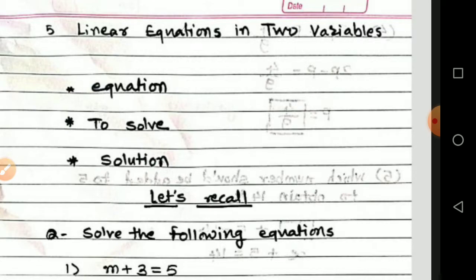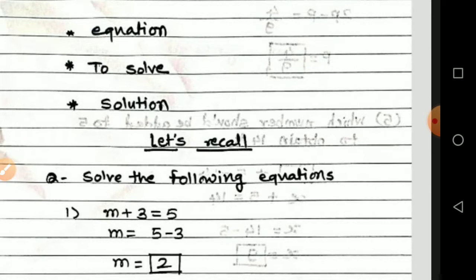In the previous standards — sixth, seventh, eighth — we have seen linear equations in one variable. 'Linear' means if we draw the graph of that equation on graph paper, we get a straight line, so its name is linear. 'One variable' means only one type of variable is used in the equation.